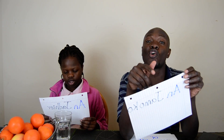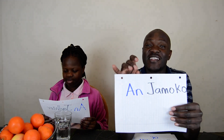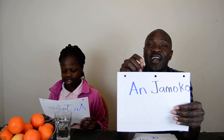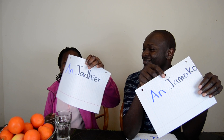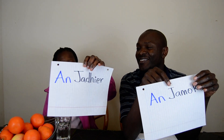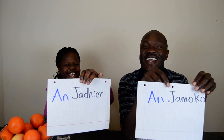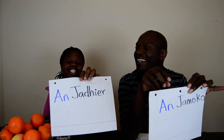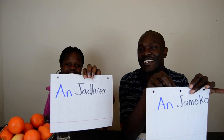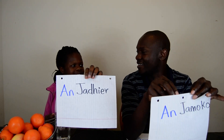Anja moko. I'm a rich person. Nikki: Anja dhyer. Anja dhyer means I am a poor person. So moko means rich and dhyer means poor. Of course, I'm the rich one!